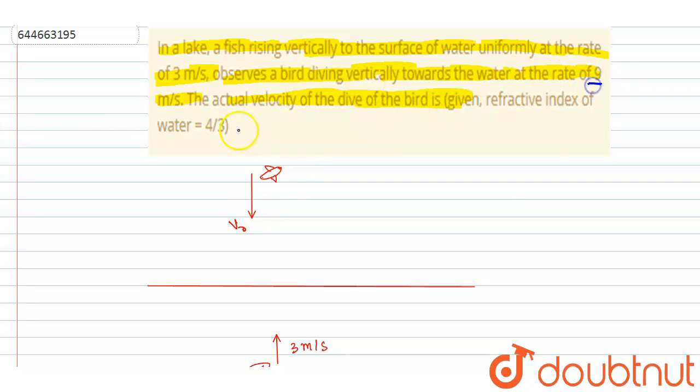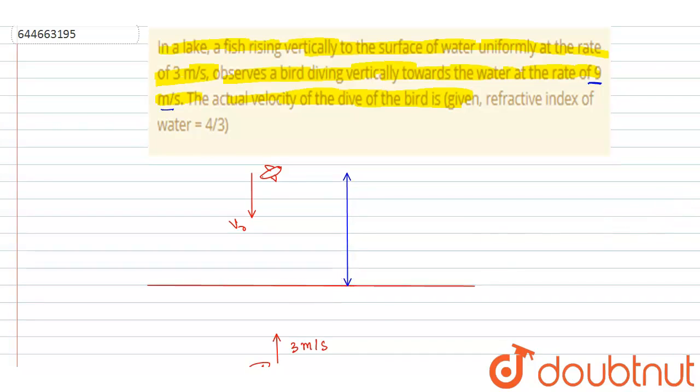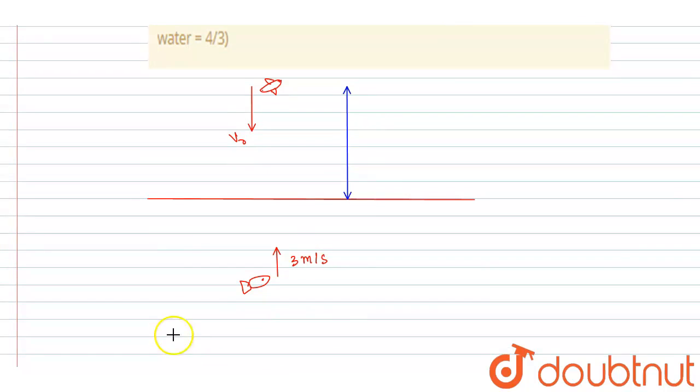So if you see, let us take this height as h₁ and this side as h₂. The distance of this bird from the interface is h₁ and distance of this fish from the interface is h₂, and the total distance between them is h₀.